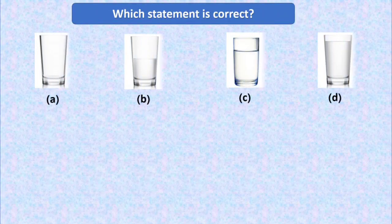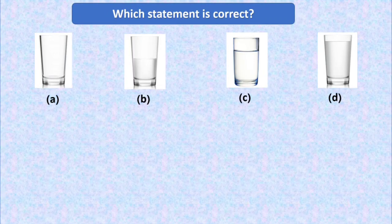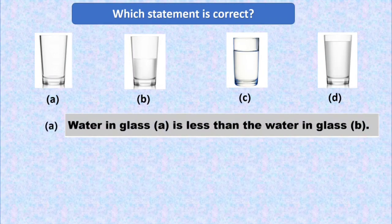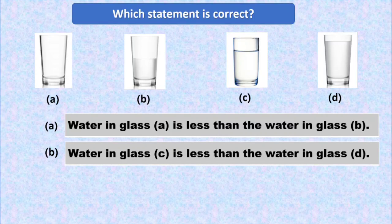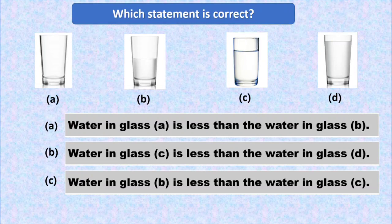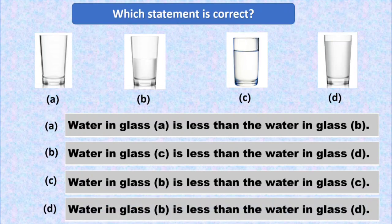It's time for the third question. Which statement is correct? Here we can see four glasses having different quantities of water. Option A is empty totally, option B is half filled, option C is filled more than half, and option D is full. The answer options are: option A — water in glass A is less than the water in glass B; option B — water in glass C is more than the water in glass D; option C — water in glass B is more than the water in glass C; and option D — water in glass B is equal to the water in glass D.